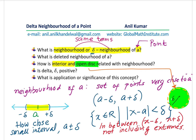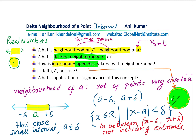We have defined neighborhood in terms of real numbers and seen how we view it linearly or in a region. In both cases, it is basically an interval where the extreme value is not included. If the point itself is also not included, we call it a deleted neighborhood. Thanks for your time and all the best.